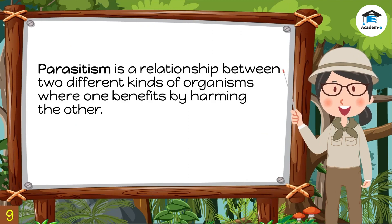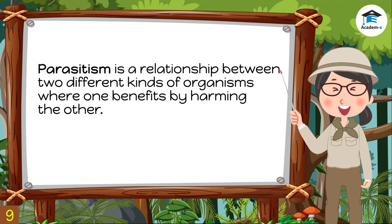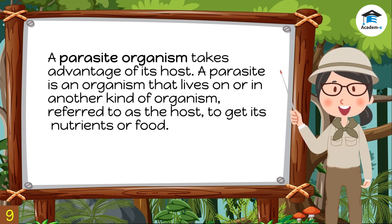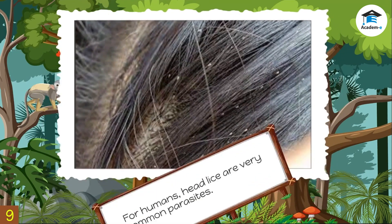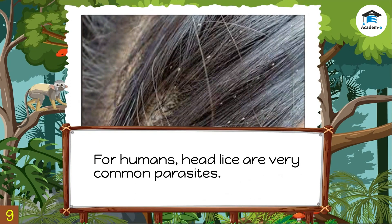Another kind of symbiotic relationship is parasitism. Parasitism is a relationship between two different kinds of organisms where one benefits by harming the other. A parasite is an organism that lives on or in another organism — referred to as the host — to get its nutrients or food. The parasite harms the host in the process and may even cause its death. For example, head lice are very common parasites for humans. These small insects infest your head and suck your blood for survival. Your head can get very itchy from the bites, and lice infestation is very contagious.